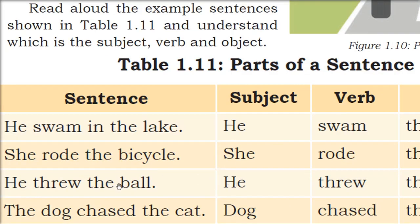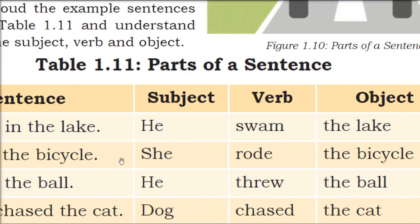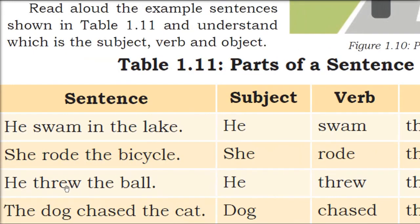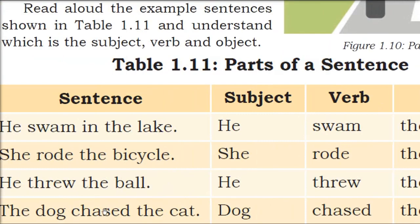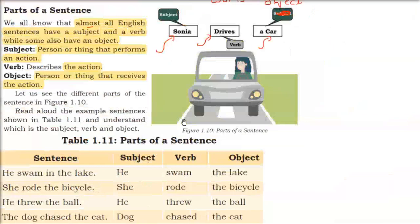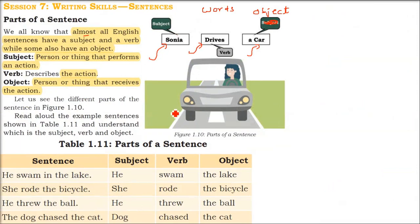He threw the ball. He is the subject, throw is the verb, and ball is the object — what is getting the work done. The dog chased the cat. Dog is the subject, cat is the object — who is being chased — and chasing is the verb. So these are the parts of a sentence: subject, verb, and object.